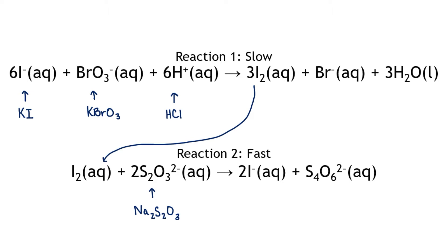So we will know that when all of the thiosulfate is used up, we will see a blue color start to form. You will start your timer as soon as we add the bromate to the solution, and you will stop your timer as soon as you start to see the blue forming in the solution. This means that all of the thiosulfate has been used up. We will use this time and some stoichiometry to calculate the rate of change in the concentration of the bromate ion.